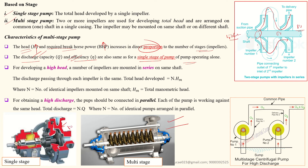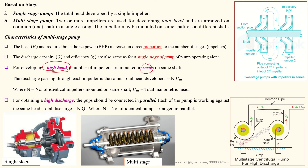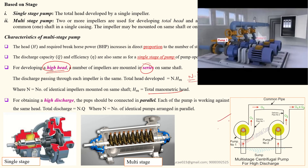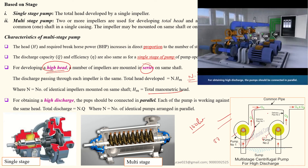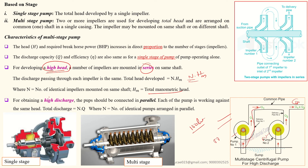So a multi-stage pump draws the same discharge as a single impeller, but achieves a much higher head. For developing high heads, arrange pumps in series — the total head is the number of impellers multiplied by the head per impeller. For high discharge, arrange pumps in parallel. If each pump draws 50 liters and two are in parallel, the total discharge is 100 liters.